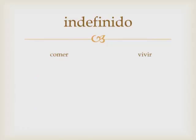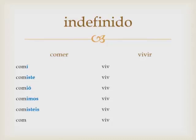Let's look at the ER and IR endings now, for comer and vivir. For comer: comí, comiste, comió, comimos, comisteis, comieron. The endings are: -í, -iste, -ió, -imos, -isteis, -ieron.